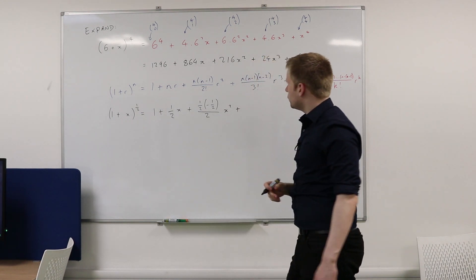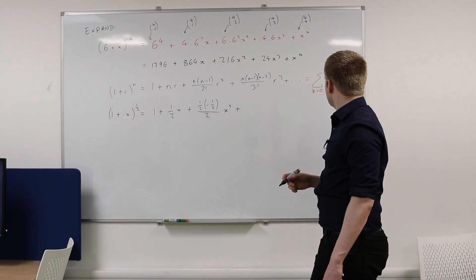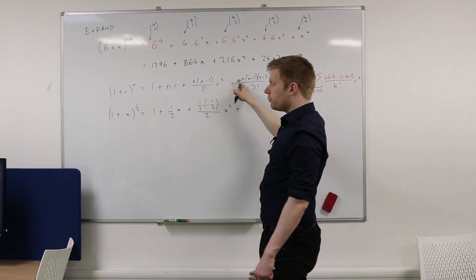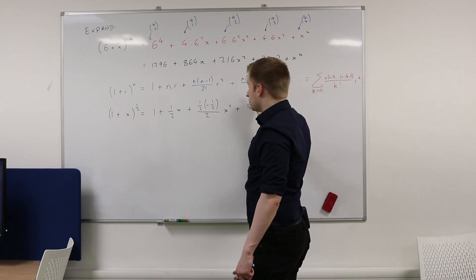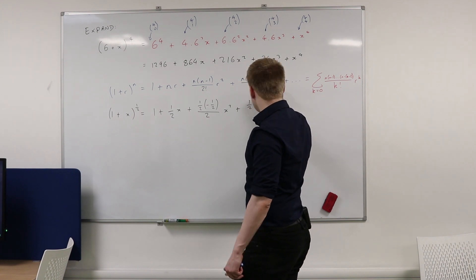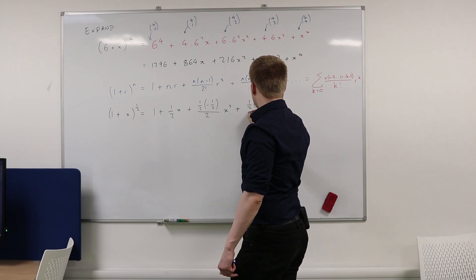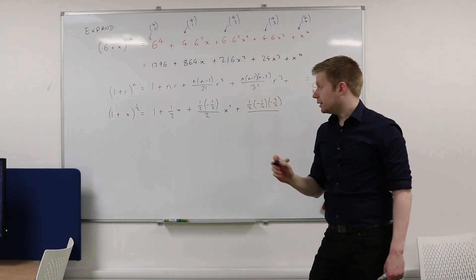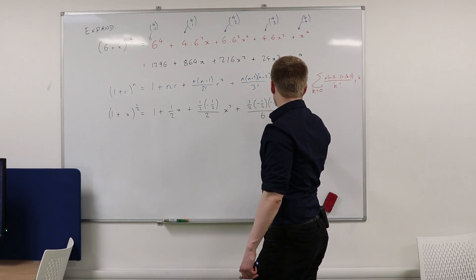What's the next term? So we'll do the first four terms. So you're going to get half, times by half minus 1, negative 1 half, times by half minus 2, or negative 3 over 2, divided by 3 factorial. What's 3 factorial again? It's 6, isn't it? And then that's x to the power of 3.